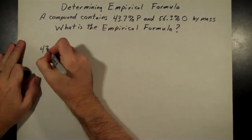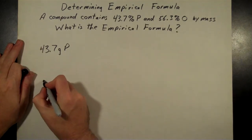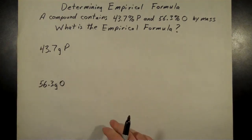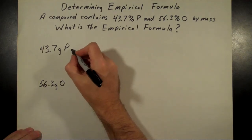As before, we're just going to change those percent signs into gram signs. So we're going to have then 43.7 grams of phosphorus and 56.3 grams of oxygen.